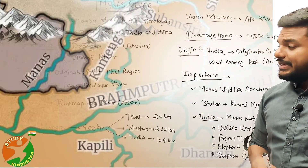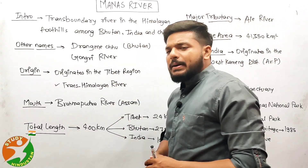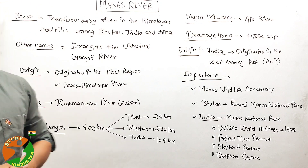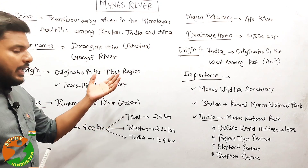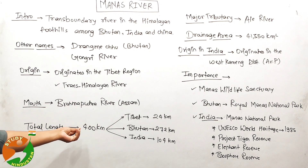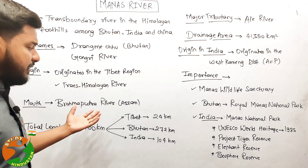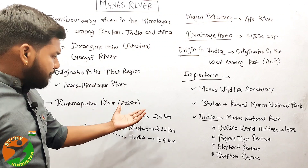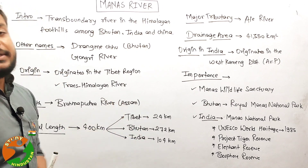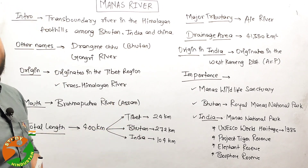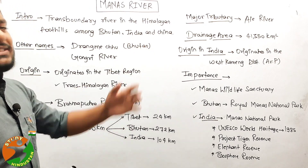The Manas River merges with the Brahmaputra River in the state of Assam. The total length of the Manas River is 400 kilometers. Breaking this down: 24 kilometers in China, 272 kilometers in Bhutan, and 104 kilometers in India.